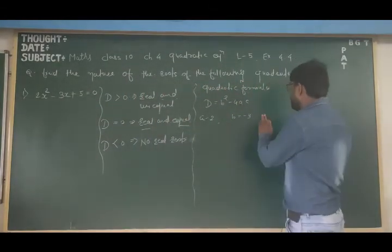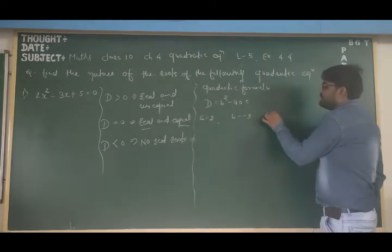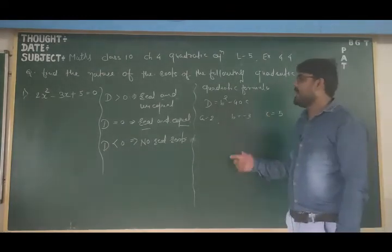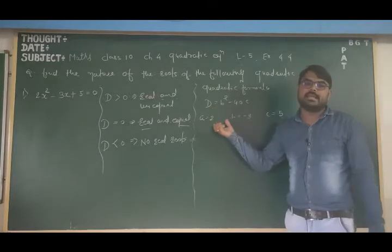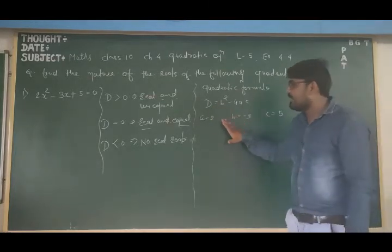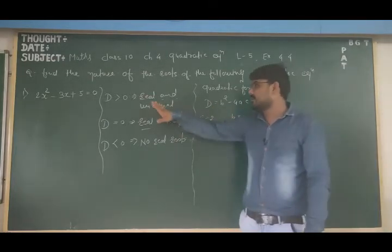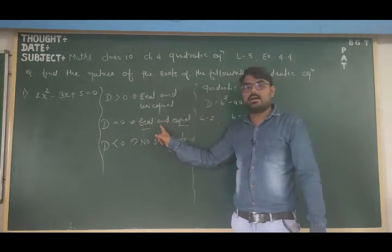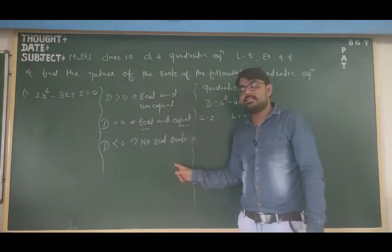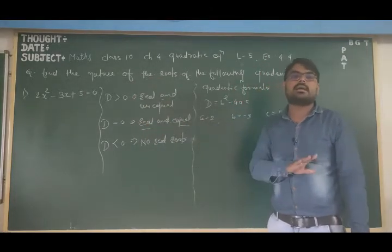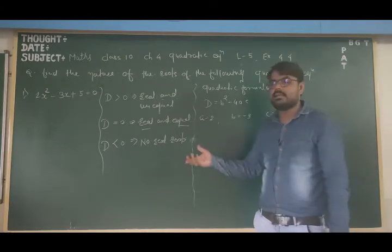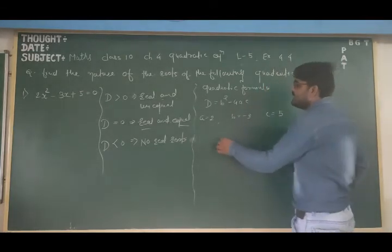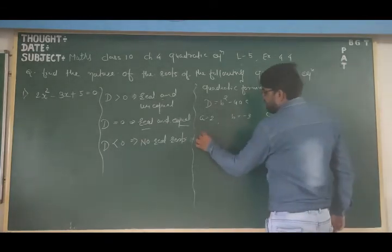Remember, when finding a, b, c values, you must take the sign along with the value. The coefficient of x is 3, but since it has a minus sign, b equals minus 3. And c, the constant term, equals 5. So first we will find the value of D. If D is greater than zero we proceed; if D equals zero we proceed; if D is less than zero, we stop — because the equation will have no real roots.